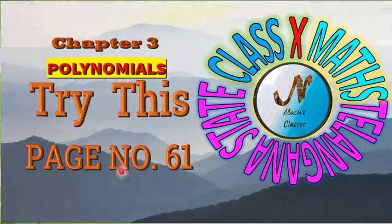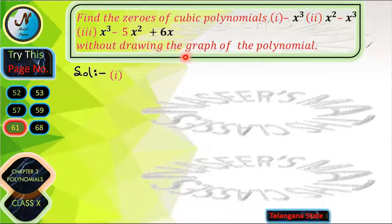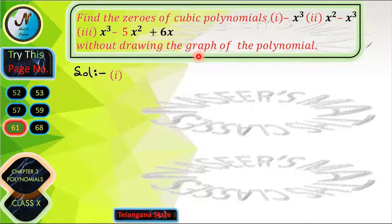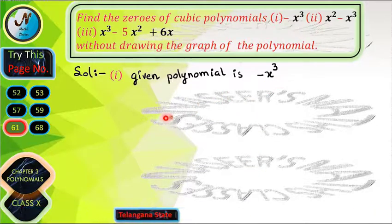Now we are going to solve Exercise 3.3, problem number 61, Chapter 3: Polynomials. In this problem, we have to find the zeros of a cubic polynomial without drawing the graph of the polynomial. So first we write the given polynomial: −x³.